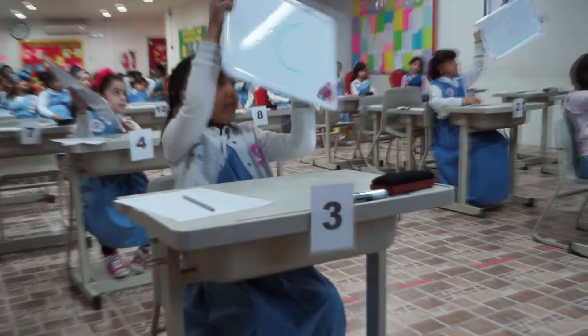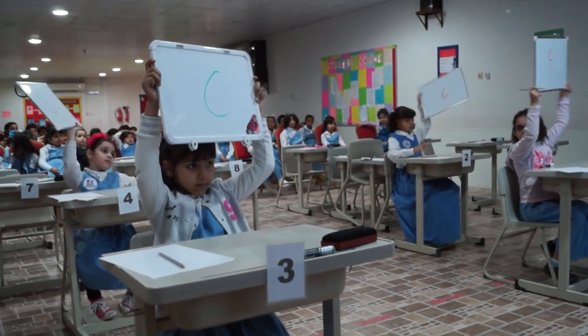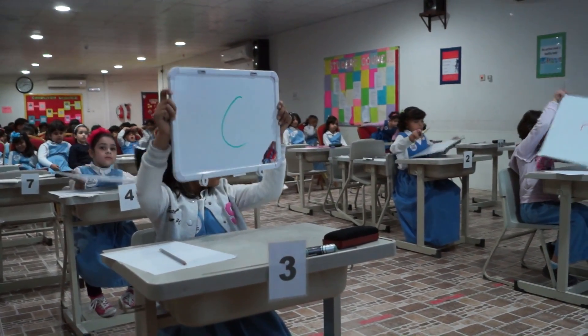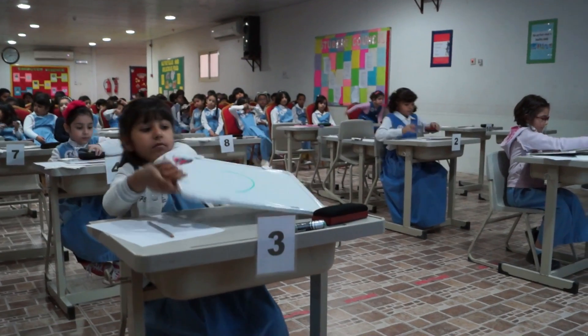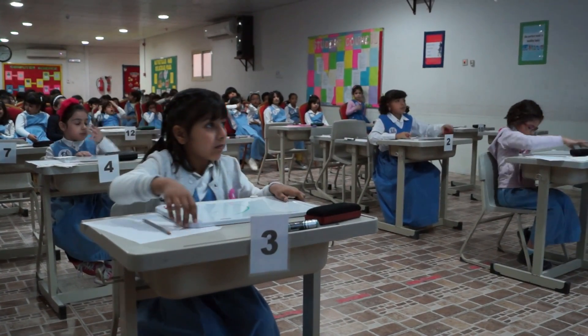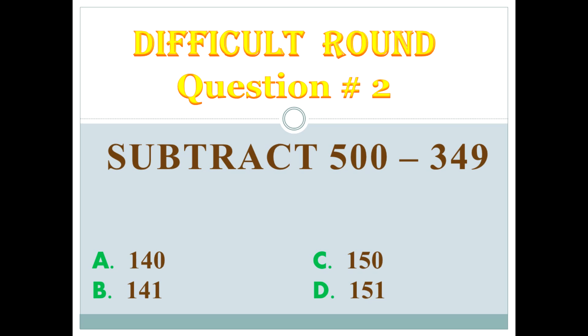The correct answer is C. Okay, difficult. Question number 2. Subtract 500 minus 349.